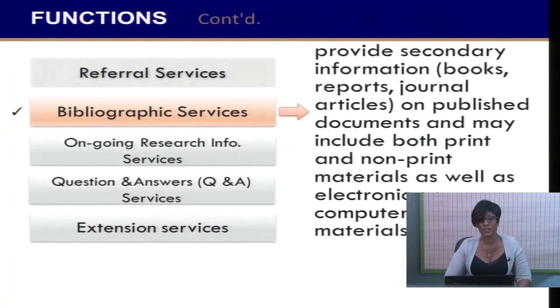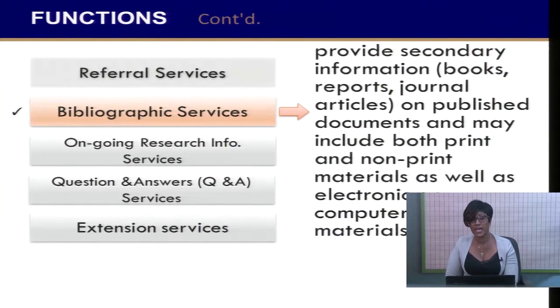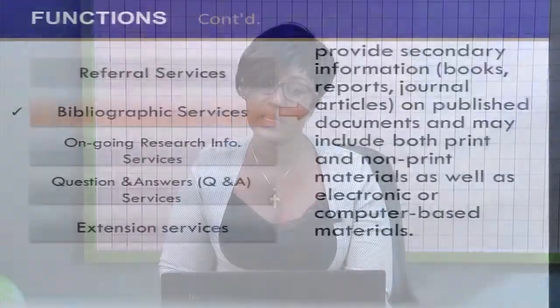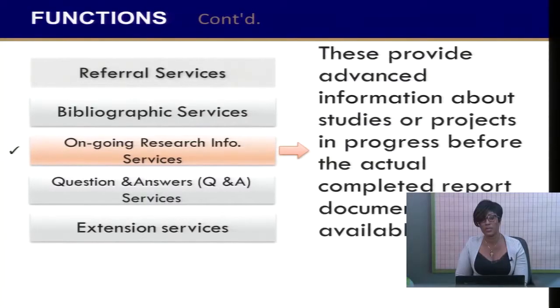Bibliographic services provide secondary information — that is, books, journals, articles, unpublished documents — and may include both print and non-print materials as well as electronic or computer-based materials. Ongoing research information services provide advanced information about studies or projects in progress before the actual completed report documents become available.